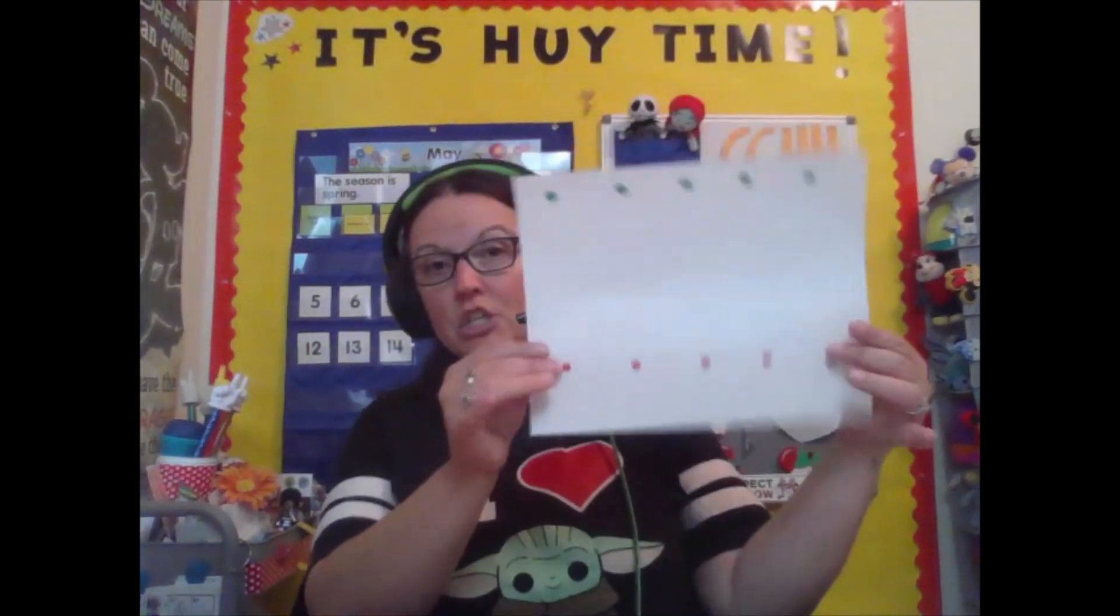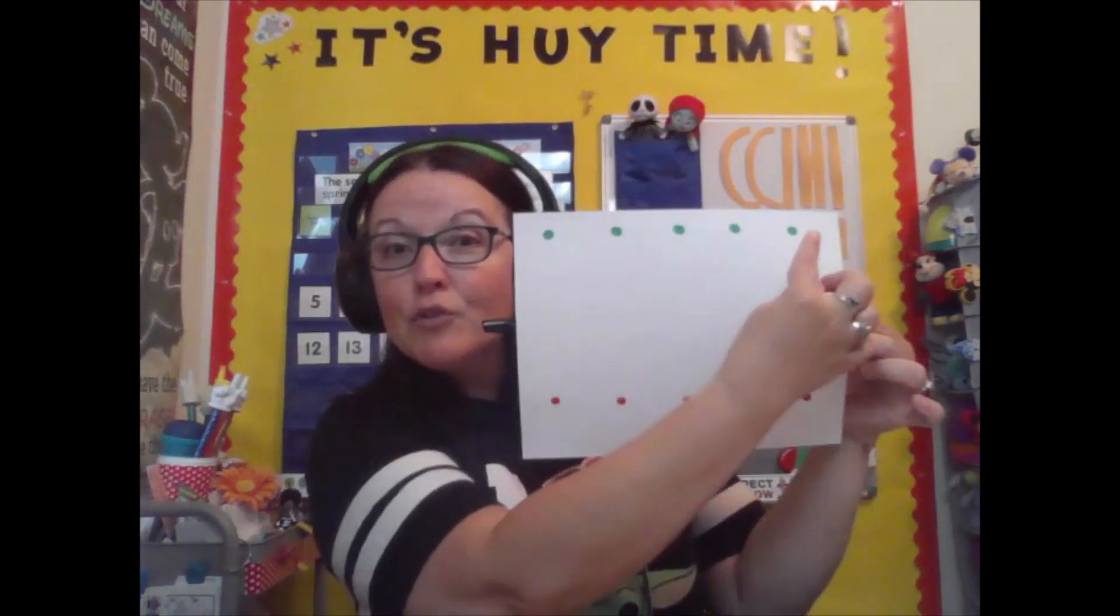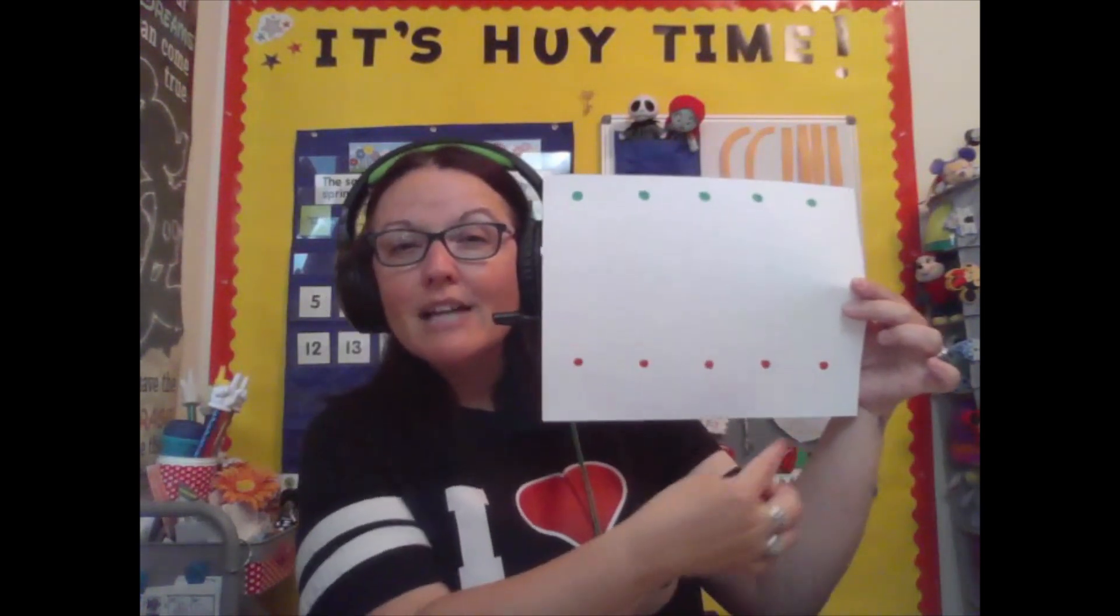All you need is something to write with. Pen, pencil, marker, whatever you have will work. And then also your awesome sheet. You need five green dots and five red dots underneath.